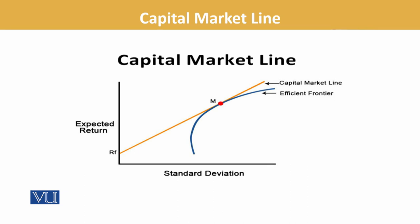If you can recall, it is similar to the previous part we discussed. But whereas there were multiple CALs, the CML is only one. The red point you can see — that is our best point, where the efficient frontier and the CML are tangent to each other. This is the graphical representation of the CML.